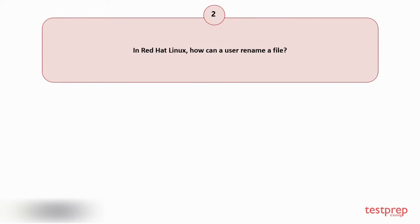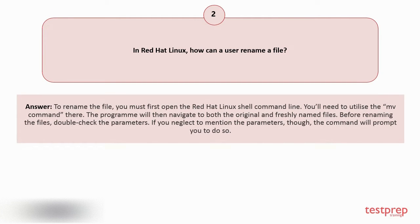Question number 2: In Red Hat Linux, how can a user rename a file? To rename the file, you must first open the Red Hat Linux shell command line. You'll need to utilize the mv command there. The program will then navigate to both the original and freshly named files. Before renaming the files, double check the parameters. If you neglect to mention the parameters, the command will prompt you to do so.